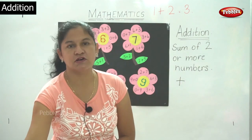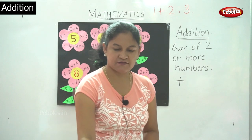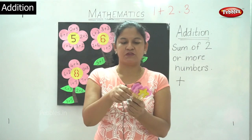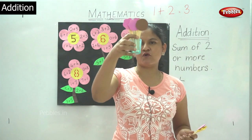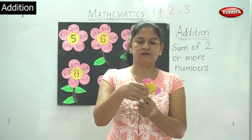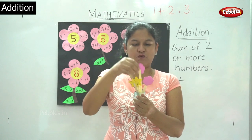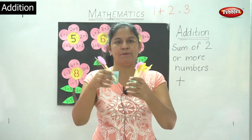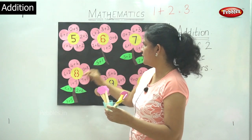Next we will be moving on to the next number which is number 8, and we will take another example using ice creams. In the first cup I am having 1, 2, 3 and 4 ice creams, and in the next cup I am also having 4 ice creams. So 4 plus 4 will give me 8.